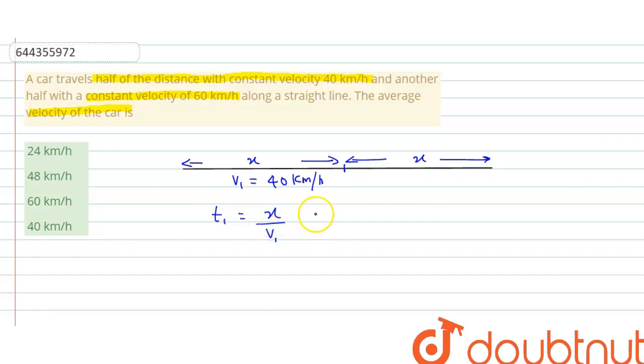And for second time interval, velocity of particle will be 60 km per hour. So this time interval t2 should be equal to x upon v2.